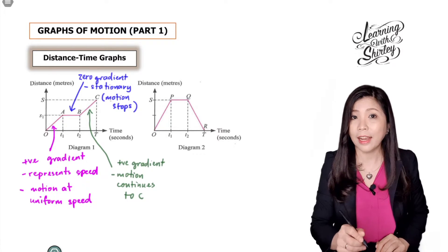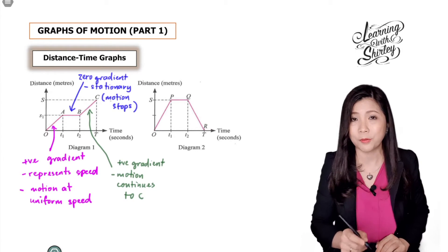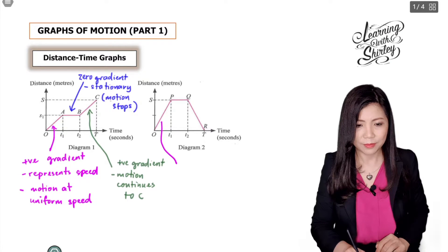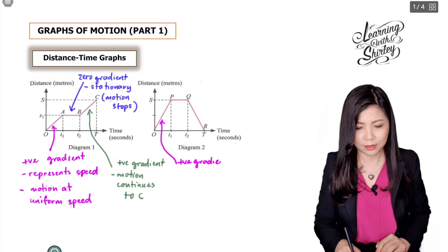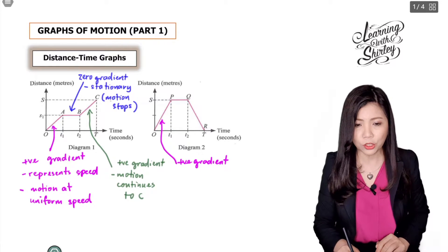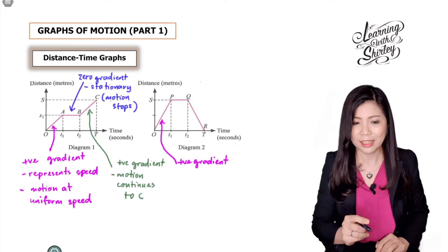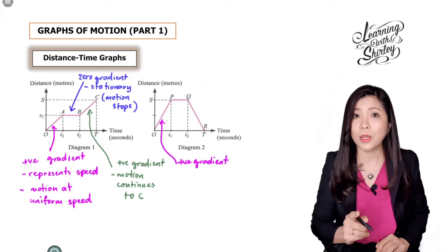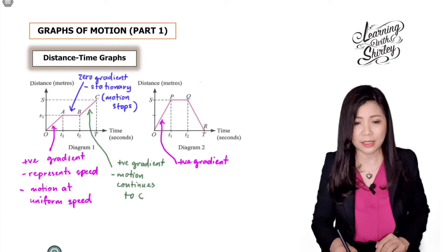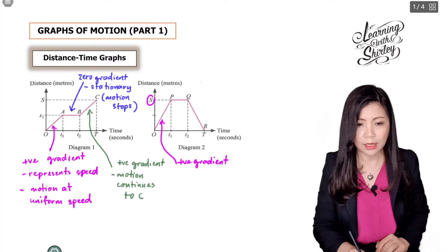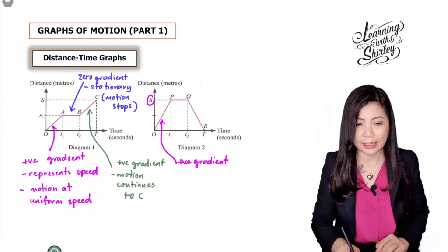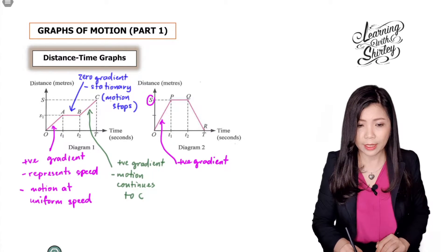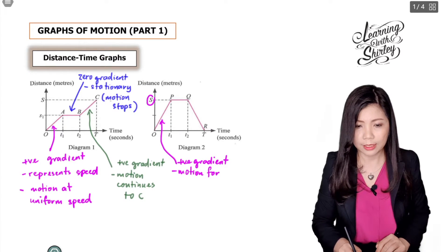Now let's move on to the next graph. For line OP, the line is going upwards, which means it's a positive gradient. This represents motion for a distance of s meters in a period of t1 seconds. The maximum on the graph is s, so that is the distance traveled within the period of t1 seconds.